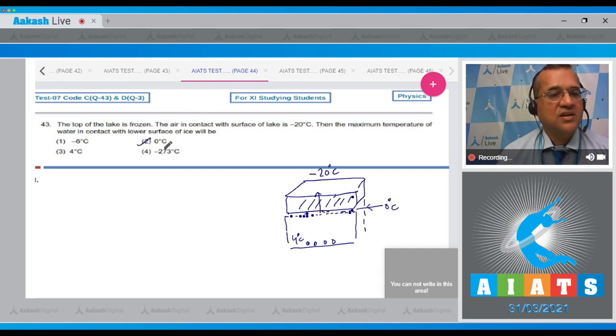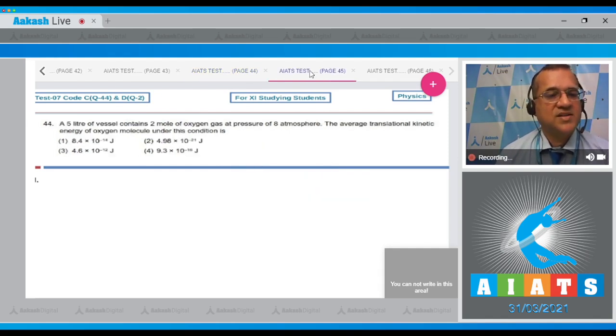The temperature is zero degrees centigrade, so answer to this question is 2. Question 44: A five liter vessel contains two moles of oxygen gas at a pressure of eight atmospheres. Find the average translational kinetic energy of the oxygen molecule under this condition.